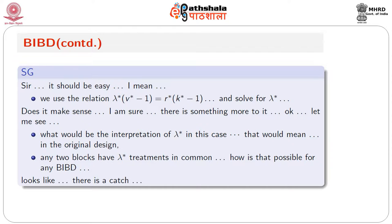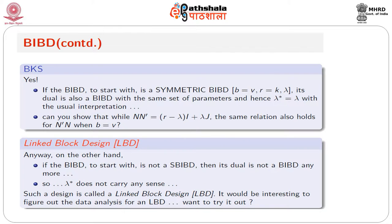One can show that while N·N^T is a matrix with diagonal entries all r and off-diagonal entries all lambda, written as (r - lambda)·I + lambda·J, the same relation also holds for N^T·N, which refers to the dual design — at least when b = v, that is the case of a symmetric BIBD. Can you show that if N·N^T = (r - lambda)I + lambda·J, the same necessarily holds for N^T·N when b = v? That goes as a question for you to think about.